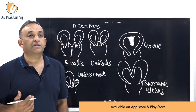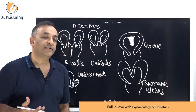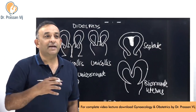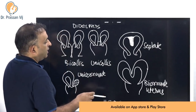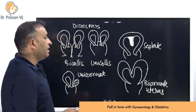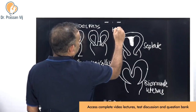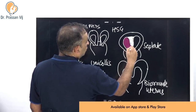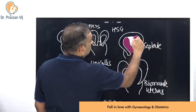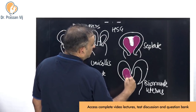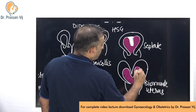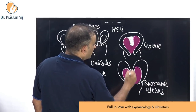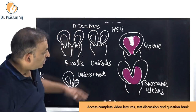The septate and bicornuate uterus are a topic of intense discussion between gynecologists and radiologists. On hysterosalpingography, where radiopaque dye is injected into the uterus, both show a split cavity that looks very similar on the X-ray. There are numerous discussions as to which is septate and which is bicornuate.